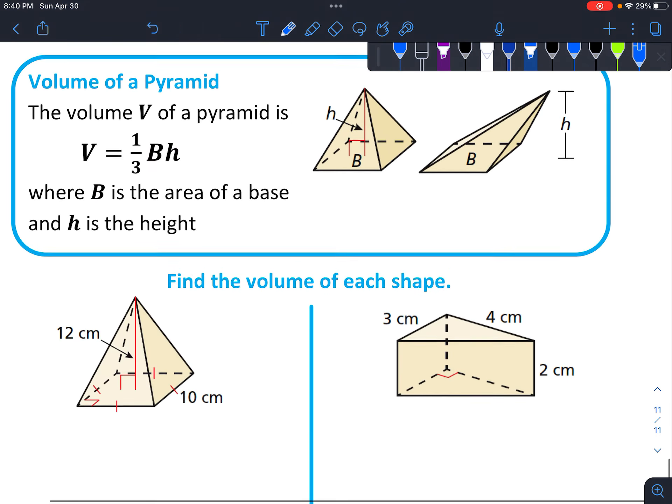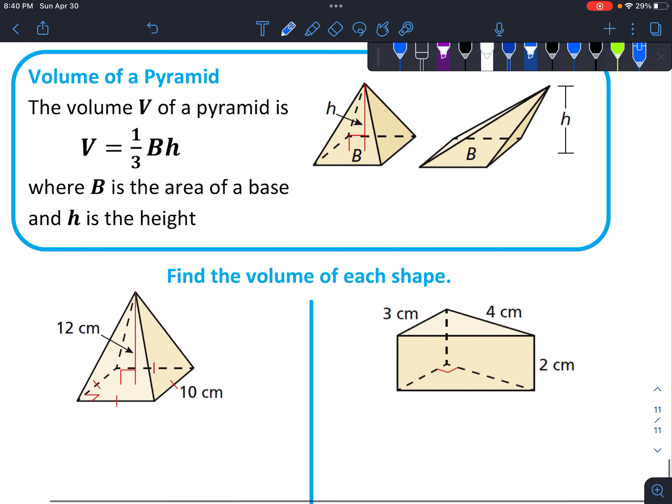The volume of a pyramid is very similar, but this time it has a square base. So you're going to have the area of the base times one-third times the height.